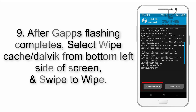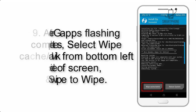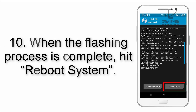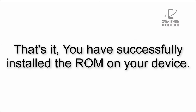Step 9: After GApps flashing completes, select Wipe Cache and Dalvik from the bottom left side of the screen and swipe to wipe. Step 10: When the flashing process is complete, hit Reboot System. That's it — you have successfully installed the ROM on your device.